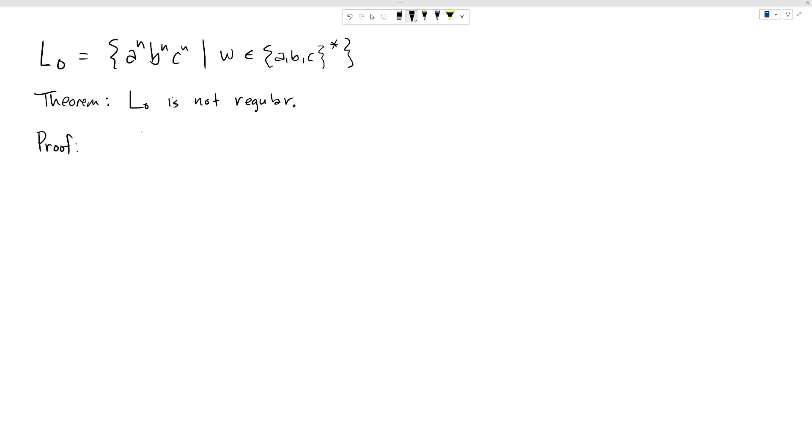And proofs using the pumping lemma are always proofs by contradiction. So our first step is to assume that L0 is regular. So we assume L0 is regular, so the pumping lemma should hold. And again, our proof here is using the pumping lemma. So if you haven't, then we just review the pumping lemma. Maybe it appears somewhere earlier so that our readers can review it as well.